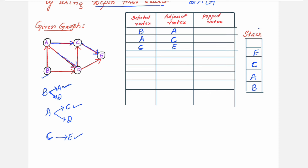Essentially what we are doing is: choose a vertex, keep it in the stack, select it, find its neighbors — and this process continues until we find a vertex with no adjacent vertices. Selecting E now: E has no adjacent vertices in the graph, meaning it is a dead end. So we pop E from the stack and place it in the popped vertex column.